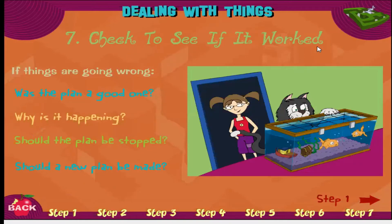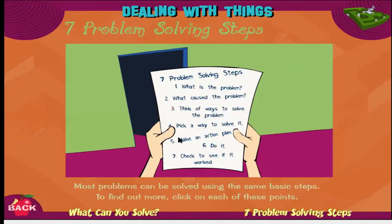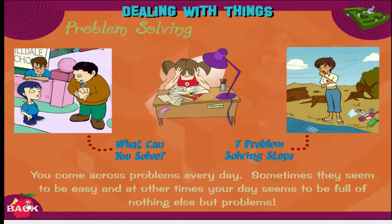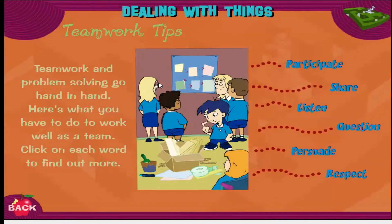Step seven: check to see if it works. If things are going wrong, ask: was the plan a good one? Why is this happening? Should the plan be stopped? Should a new plan be made? So those are all the steps: step one — what's the problem; step two — what caused it; step three — think of ways to solve it; step four — pick a way; step five — make an action plan; step six — do it; step seven — check to see if it works. Teamwork and problem solving go hand in hand.